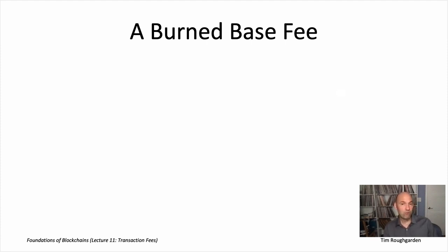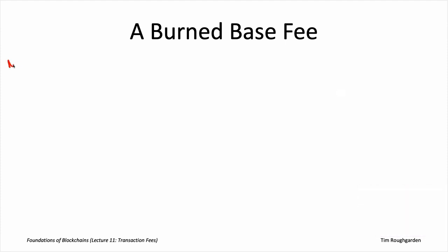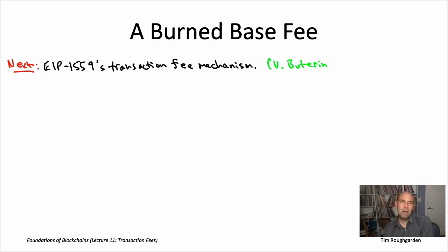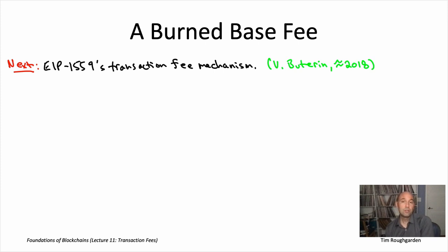EIP stands for Ethereum Improvement Proposal. This new transaction fee mechanism was developed by Vitalik Buterin, the founder of Ethereum. He had been writing about these key ideas for some time — by late 2018, all the ideas had solidified. It took a few years, but it was eventually incorporated into the Ethereum blockchain through a hard fork on August 4th, 2021, switching from a first-price auction to this new mechanism.